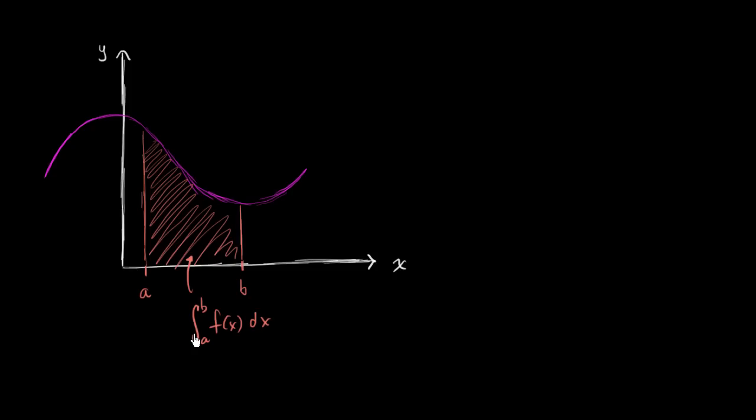Now what I want to do in this video is introduce a third value, c, that is in between a and b, and it could be equal to a or it could be equal to b. So let me just introduce it right like that, and I could write that a is less than or equal to c, which is less than or equal to b.